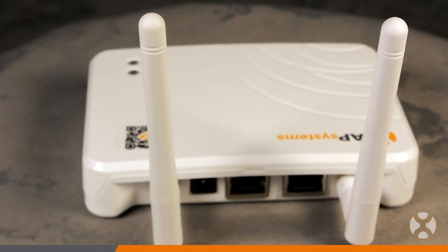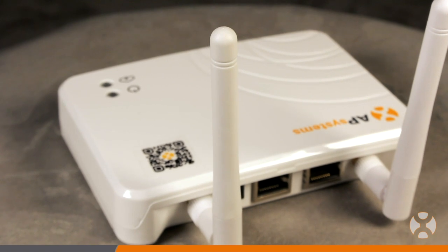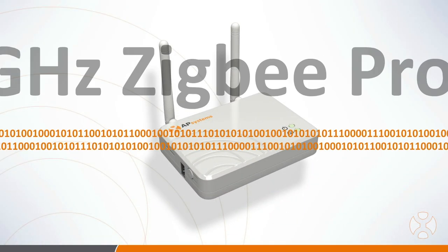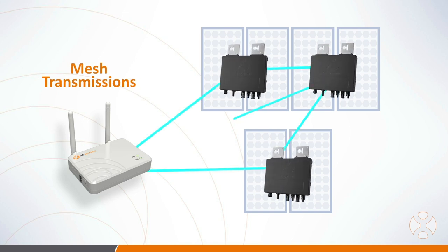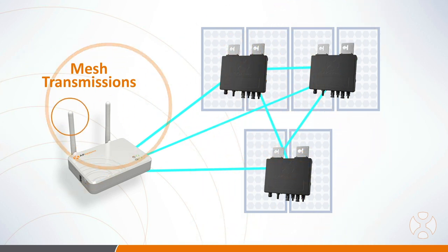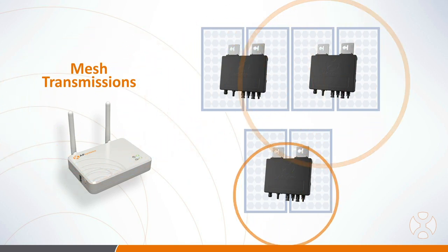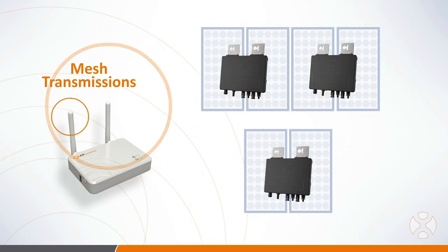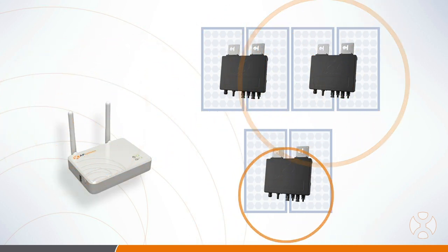A quick note about Zigbee: due to the volume of data points transmitted and collected in today's solar PV systems, many manufacturers have transitioned to high-speed data communication platforms like Zigbee. The ECUR utilizes a 2.4 GHz Zigbee protocol to create a mesh network with its microinverters, allowing microinverters to communicate data not just directly with the ECU, but through other microinverter units. The resulting speed is up to three times faster than power line communication, or PLC.